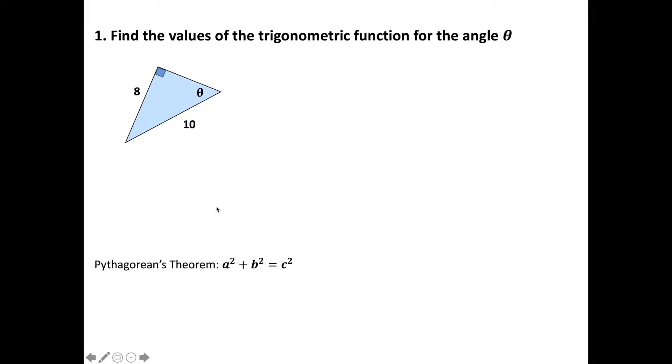So a is going to be 8 in this case. 8² + b² = 10². We know 8² is 64 and 10² is 100. Now I'm going to solve it for b². That means I need to move that 64 over.